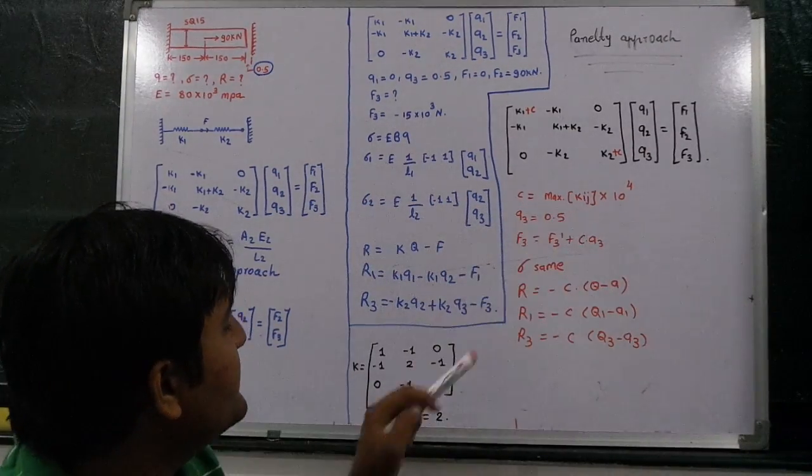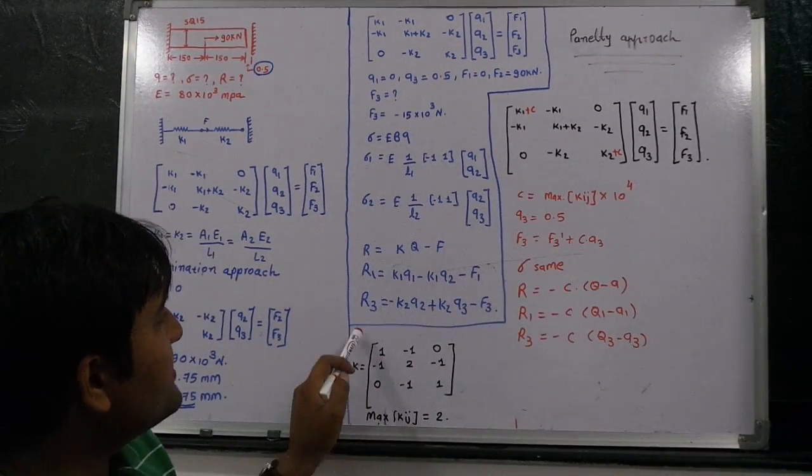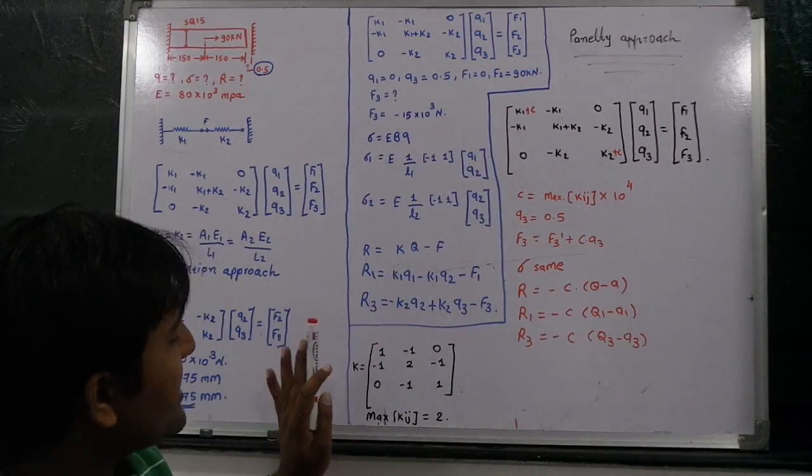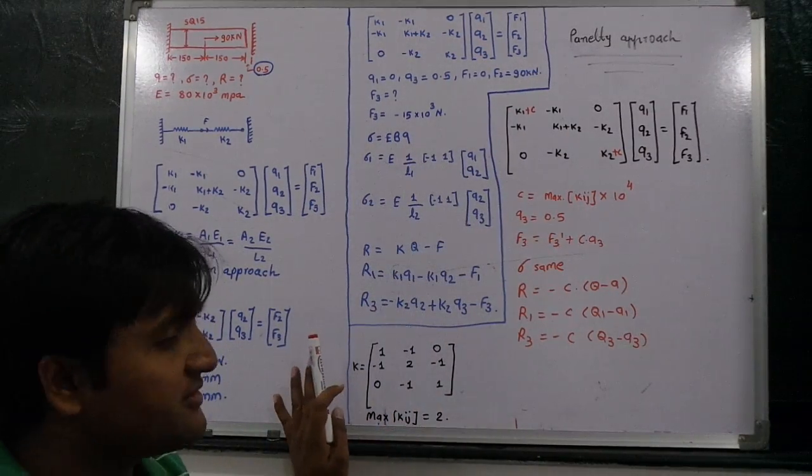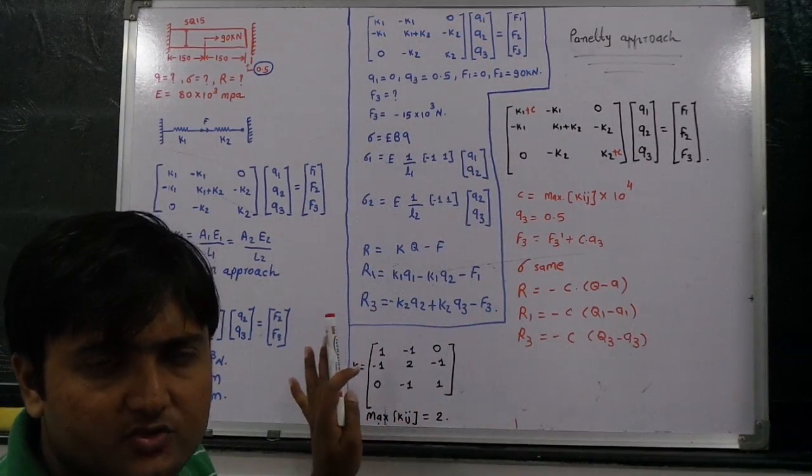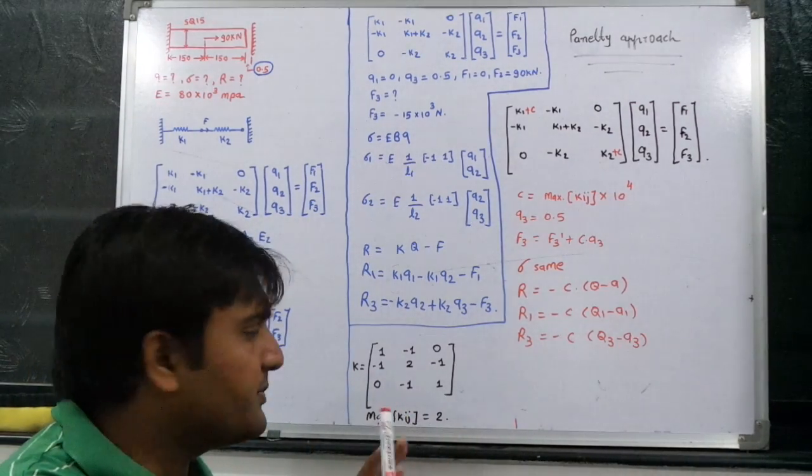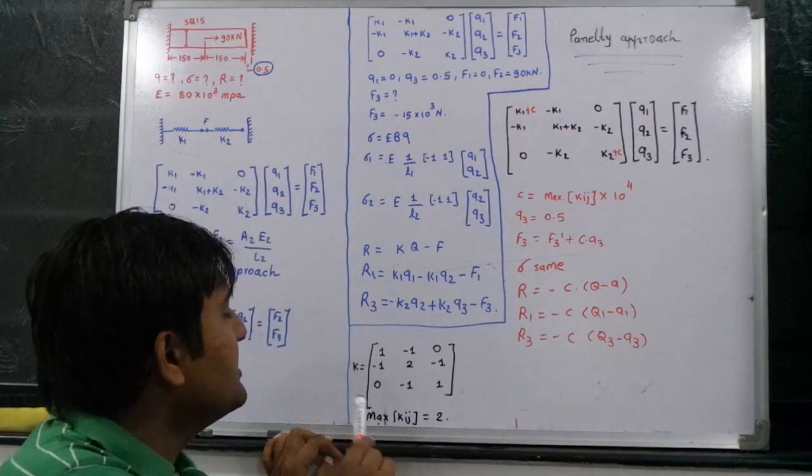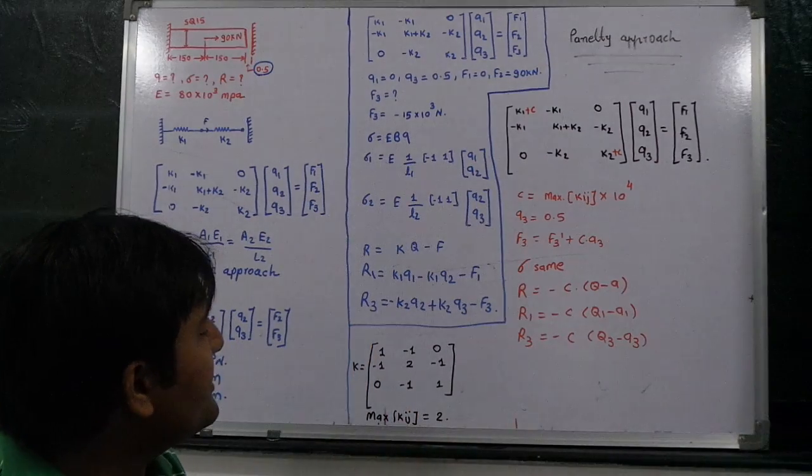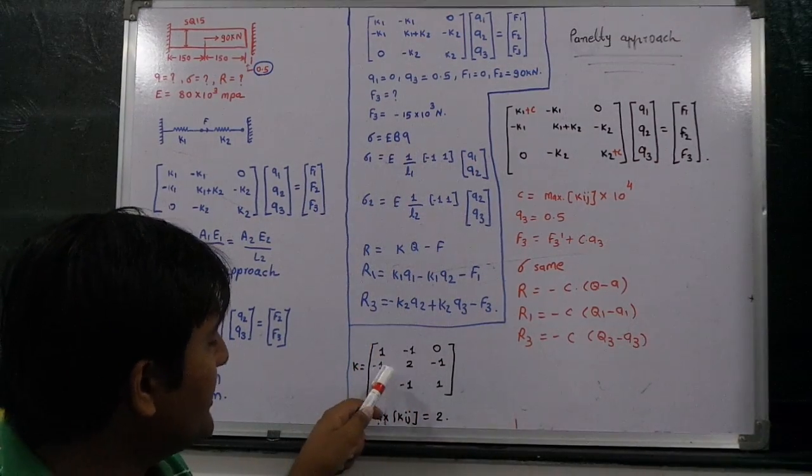What is maximum Kij? If the stiffness matrix, I am assuming this kind of matrix will generate, it is not the actual data of this example, but generally for understanding purpose. If this kind of matrix is generated: 1, minus 1, 0; minus 1, 2, minus 1; 0, minus 1, 1.